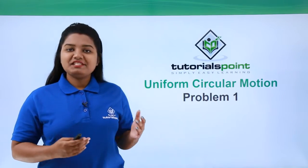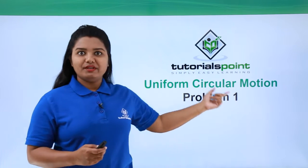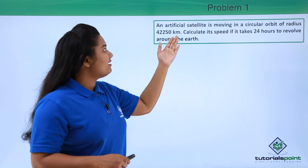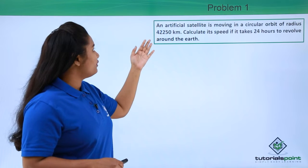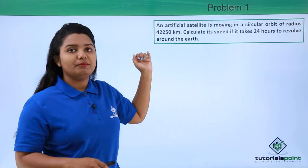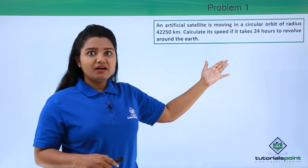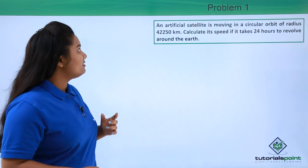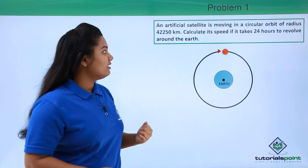Hello everyone, in this video we'll be solving a problem based on uniform circular motion. Here is the problem: an artificial satellite is moving in a circular orbit of radius 42,250 kilometers. Calculate its speed if it takes 24 hours to revolve around the earth.